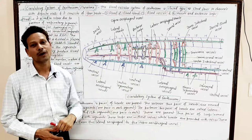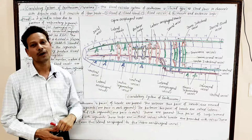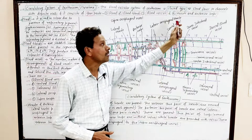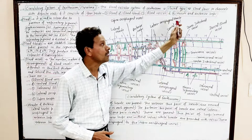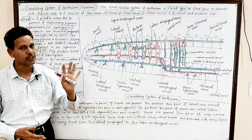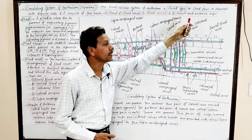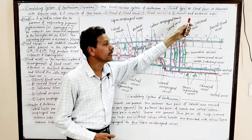This circulatory system of earthworm has four components: blood, blood glands, blood vessels, and hearts and anterior loops.